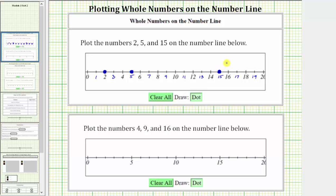For our next example, we're asked to plot the numbers 4, 9, and 16 on the number line below. And again, looking at the labels on the number line, notice how the number line is labeled every five units.